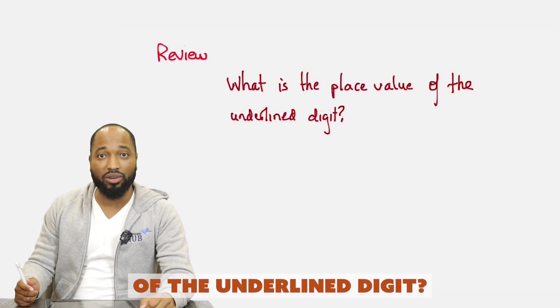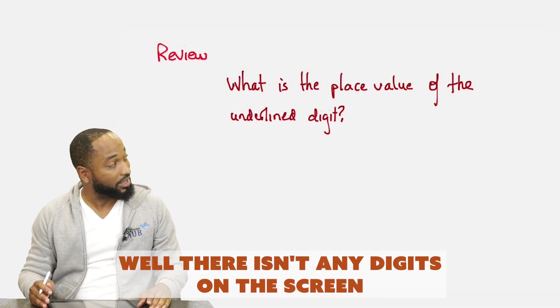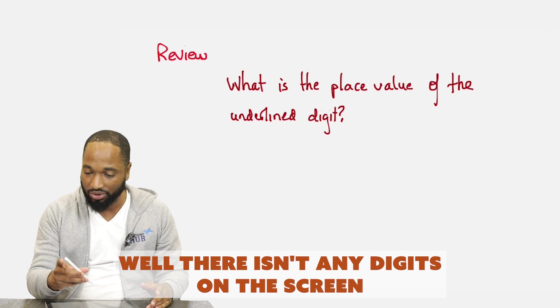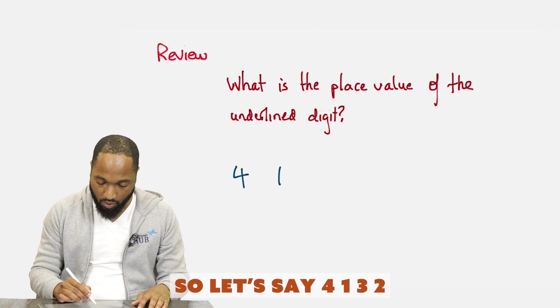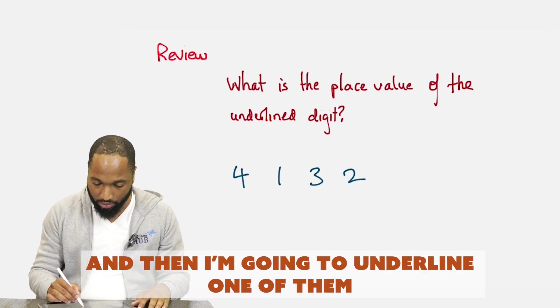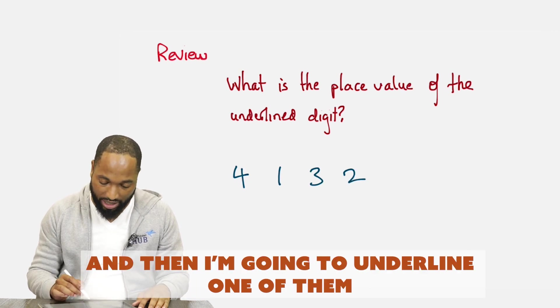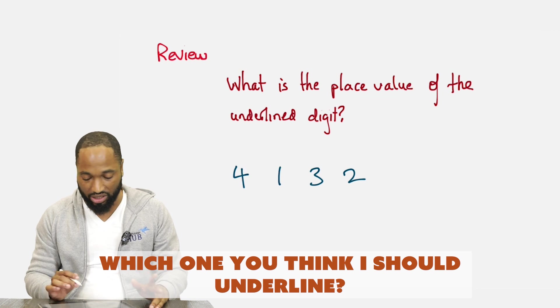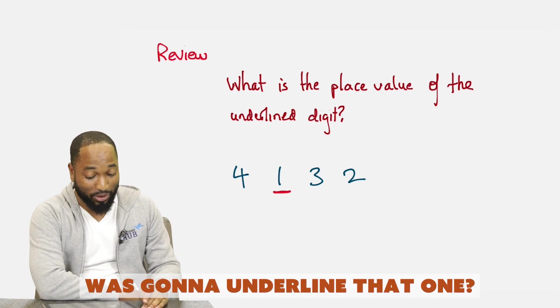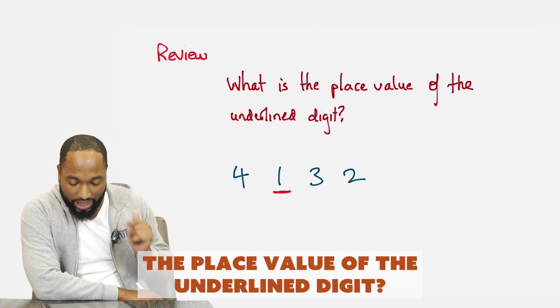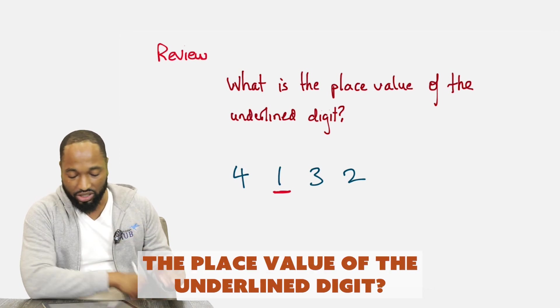What is the place value of the underlying digit? Well, there isn't any digits on the screen, so let me see if I can actually write a number here. So let's see, 4, 1, 3, 2, and then I'm going to underline one of them. Which one do you think I should underline? Maybe this one. How many of you all know I was going to underline that one?